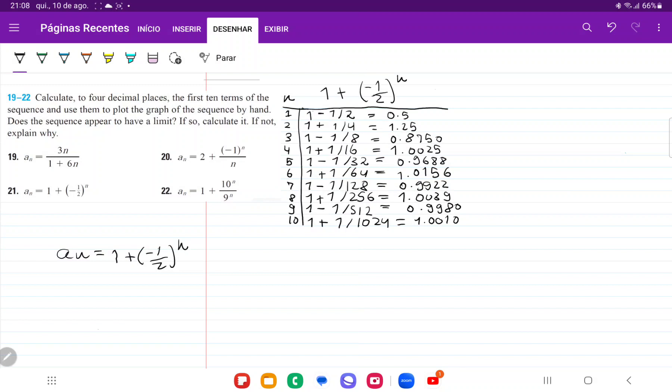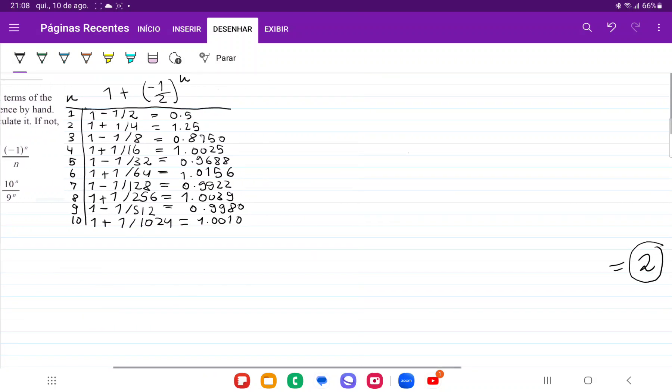a_3 is going to be 1 minus 1 half to the power of 3, so minus 1 eighth, and so on, until a_10, which is 1 plus negative 1 half to the power of 10. And so I've gone ahead and I've put in these values here, and now it wants us to plot these. So let's go ahead and try to do that.